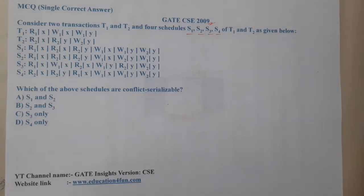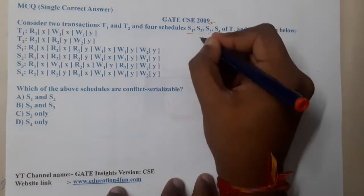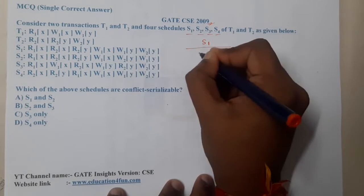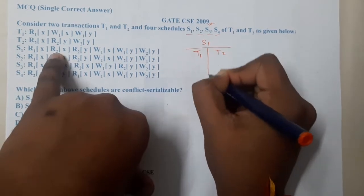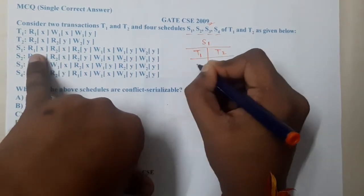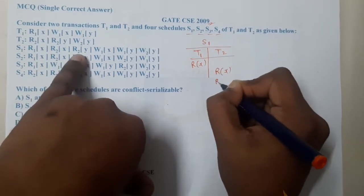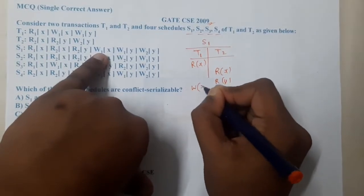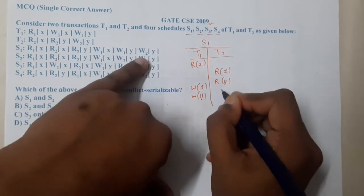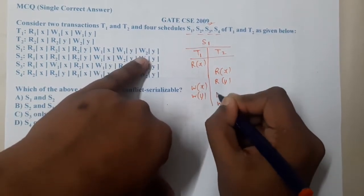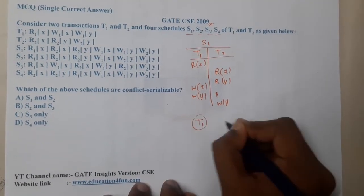Let us start with S1. S1 involves both T1 and T2. The operations are: Read(X) on T2, Read(X) on T2, Read(Y) on T2, Write(X) on T1, Write(Y) on T1, and Write(Y) on T2.